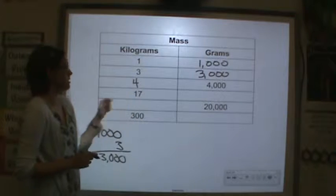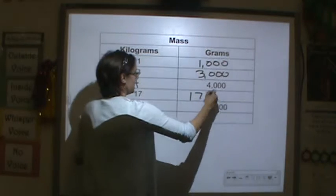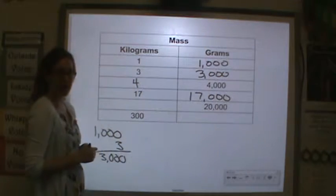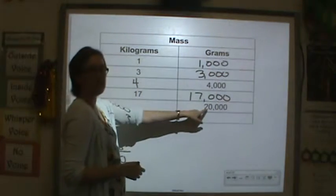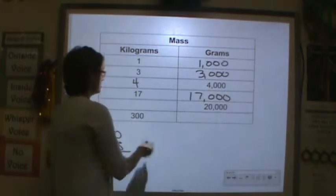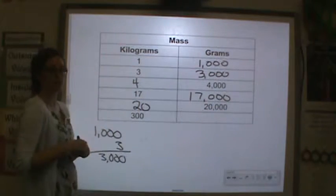17 kilograms would be 17,000 grams. 20,000 grams, right? Get rid of the three zeros. 20 kilograms.